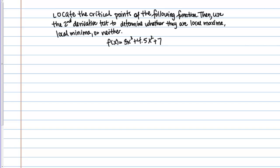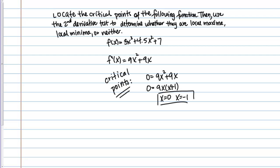This is a function we've already worked with several times during this lesson. We've already found its first derivative and its critical points, so to save time I'll transfer that information here. The derivative was 9x² + 9x, and there were no places where it didn't exist. The critical points came from where the derivative equals 0, which we found to be x = 0 and x = -1.